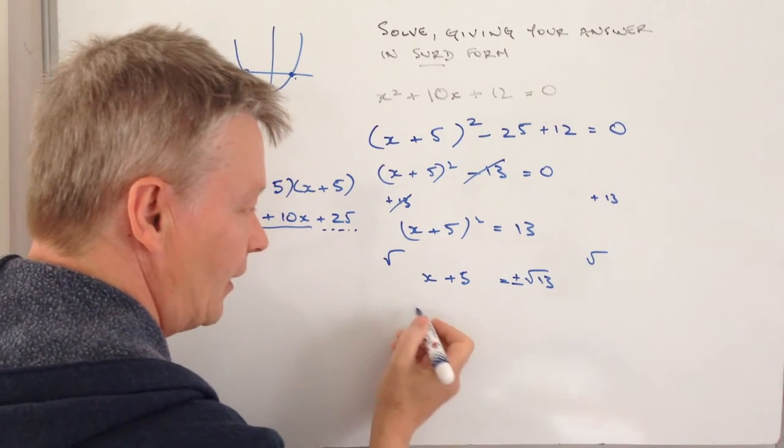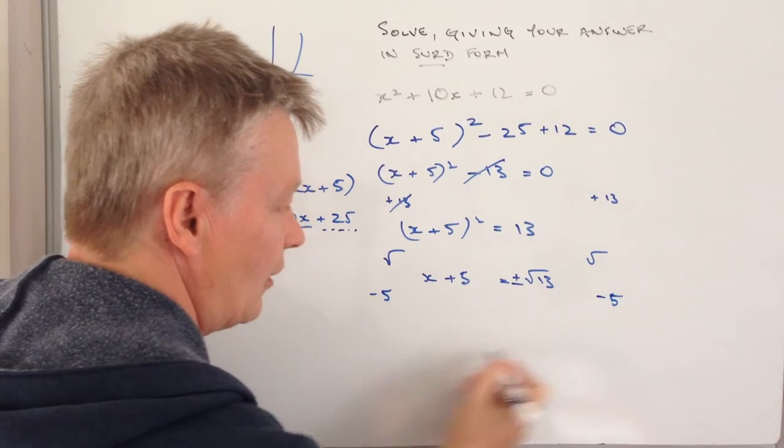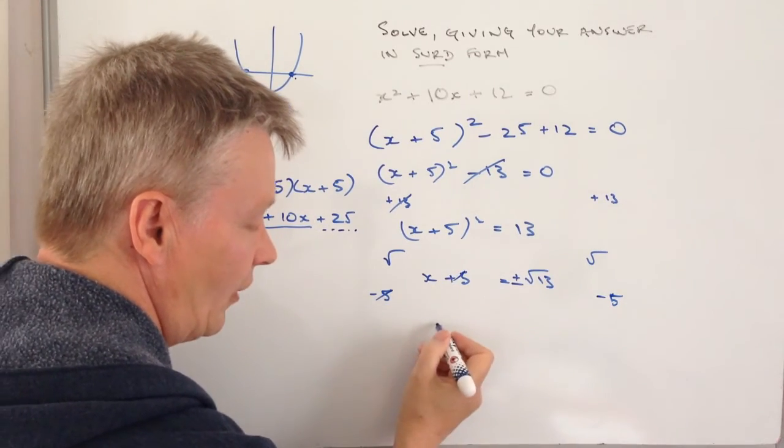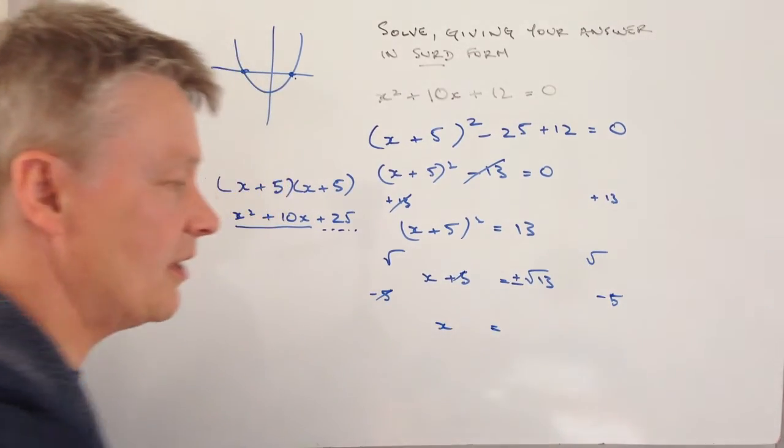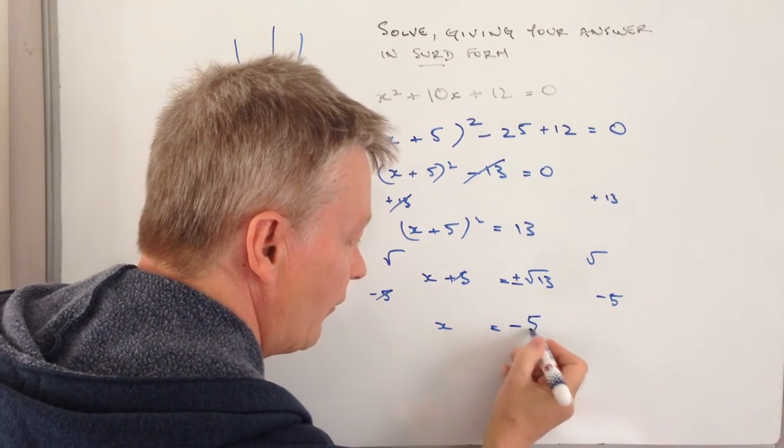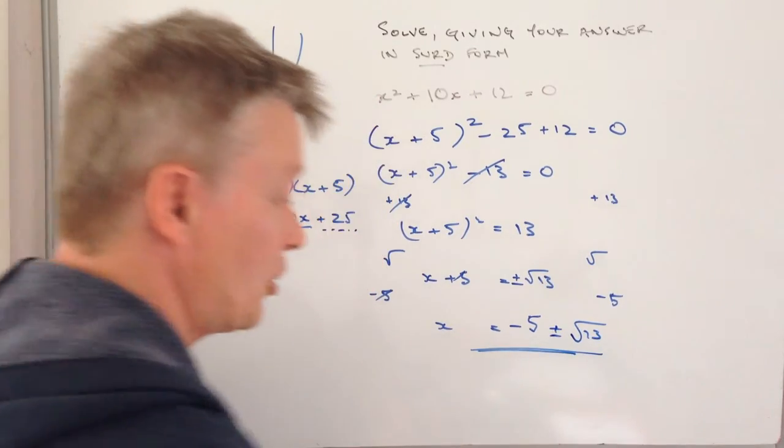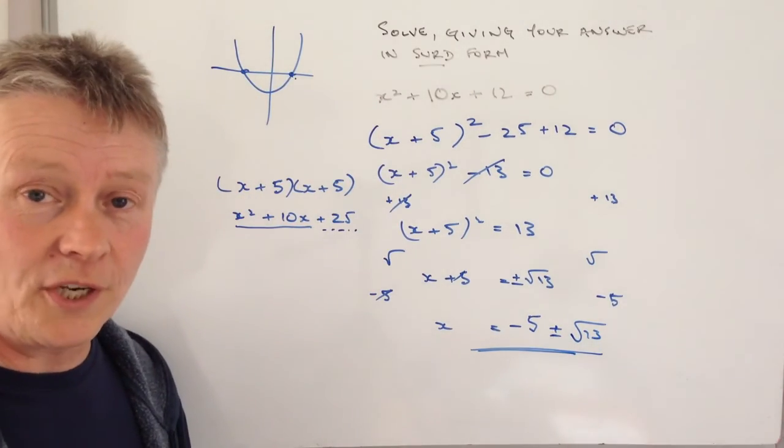I've got this x value. I'm going to minus 5 from both sides. That means on the left hand side I get x on its own, and on the right hand side I've got minus 5 plus or minus the square root of 13. And that actually answers this particular question.